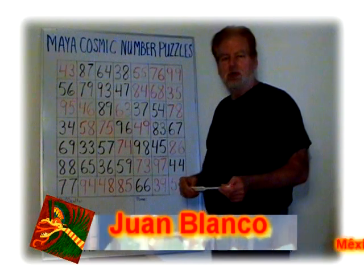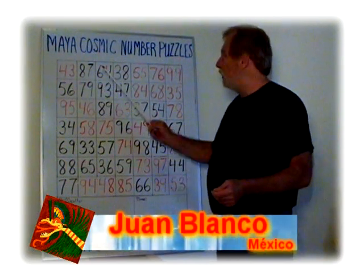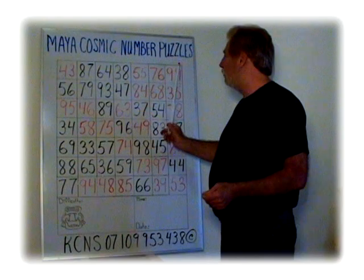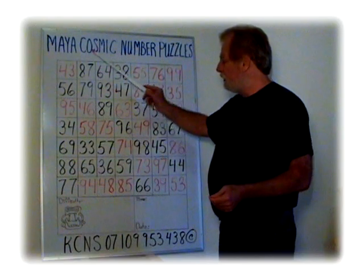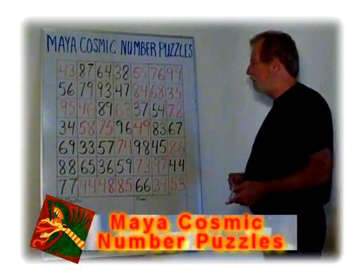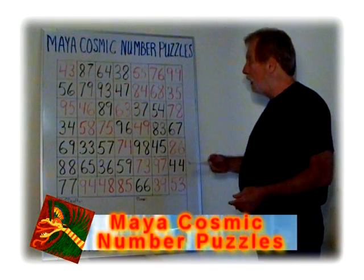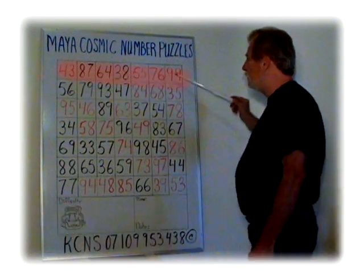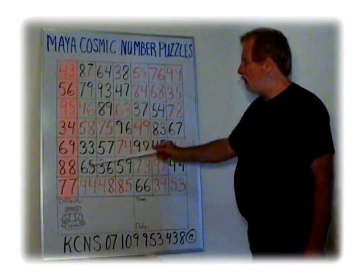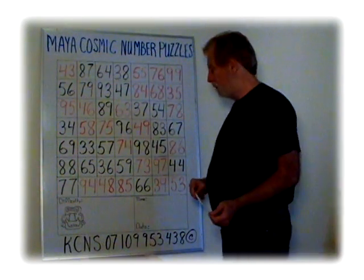Hello, my name is John White. As you remember, we do the Mayan Cosmic Number Puzzles. This puzzle was completed in a previous video. It is a 7 row by 7 column — a 7 by 7 as we call them.